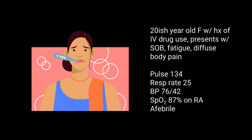Our next case involves a 20-ish-year-old female with a history of IV drug use who's presenting now with shortness of breath, fatigue, and diffuse body pains. Her vitals at triage are a pulse of 134, respirations of 25, blood pressure of 76 over 42, satting 87% on room air, and she's afebrile.